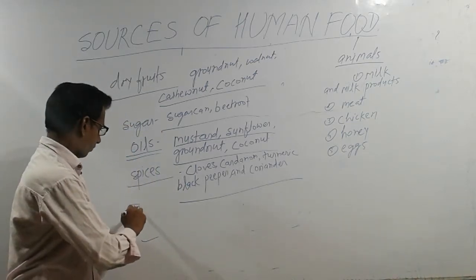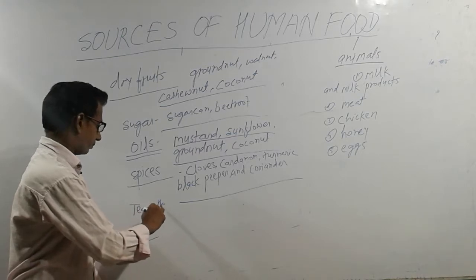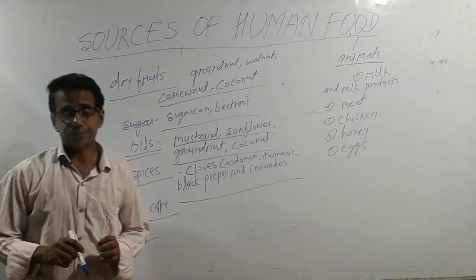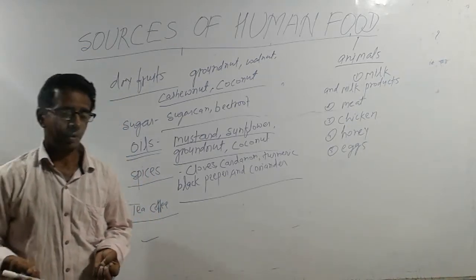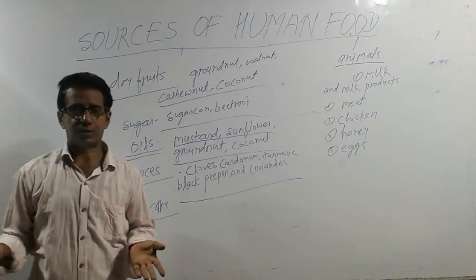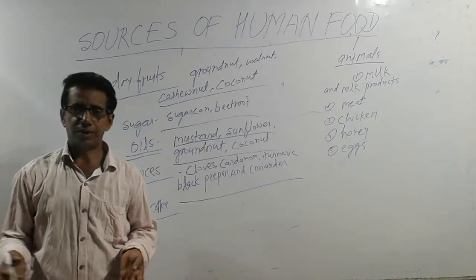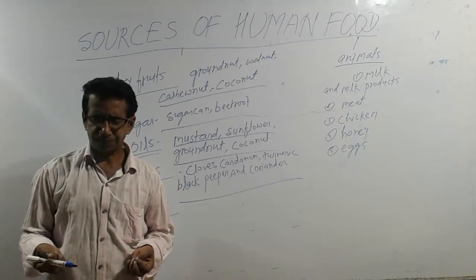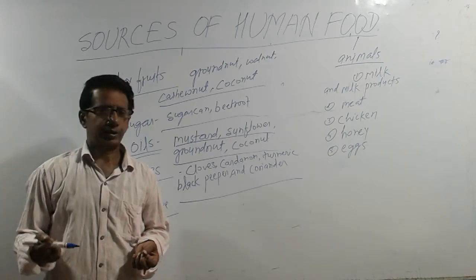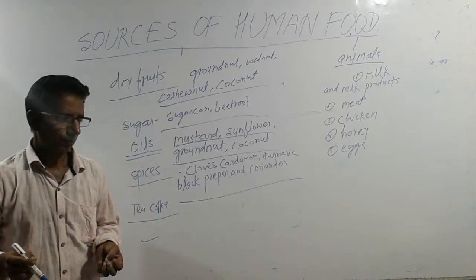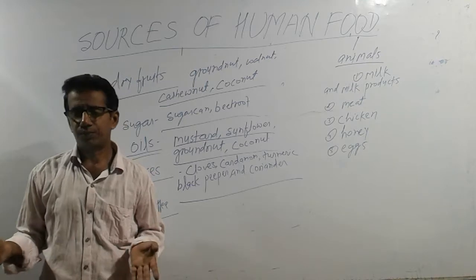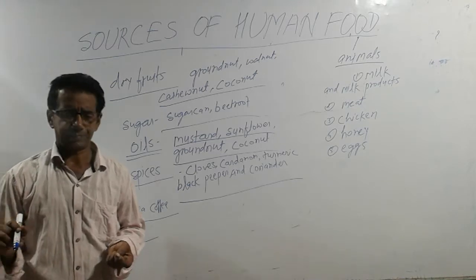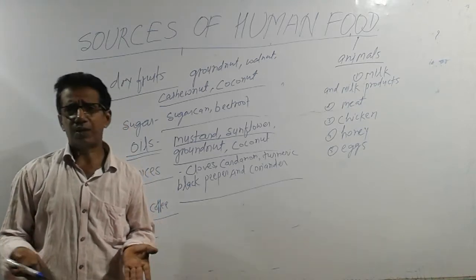Tea and coffee are also very important. Elder persons, when they get up, like to take tea or coffee. Tea and coffee are called stimulants because they contain a substance called caffeine, which acts as a stimulant.